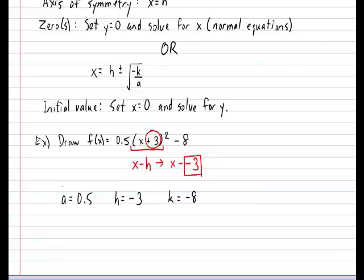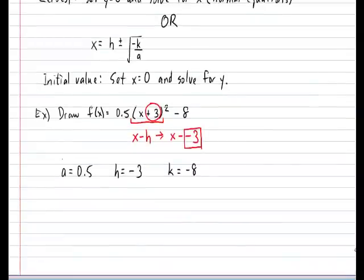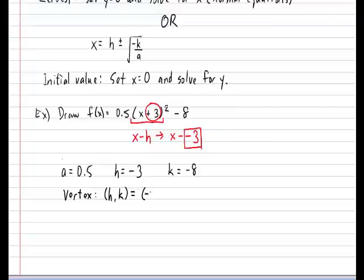Okay, let's get back to identifying all the bits and pieces of our parabola. Let's start with the vertex. The vertex is always given by h and k. So in this case our vertex will be located at minus 3 and minus 8.